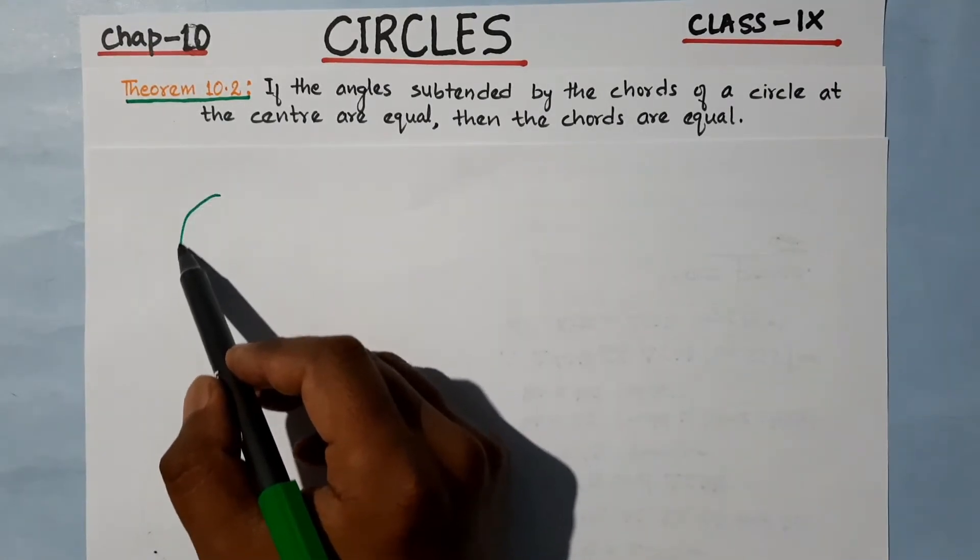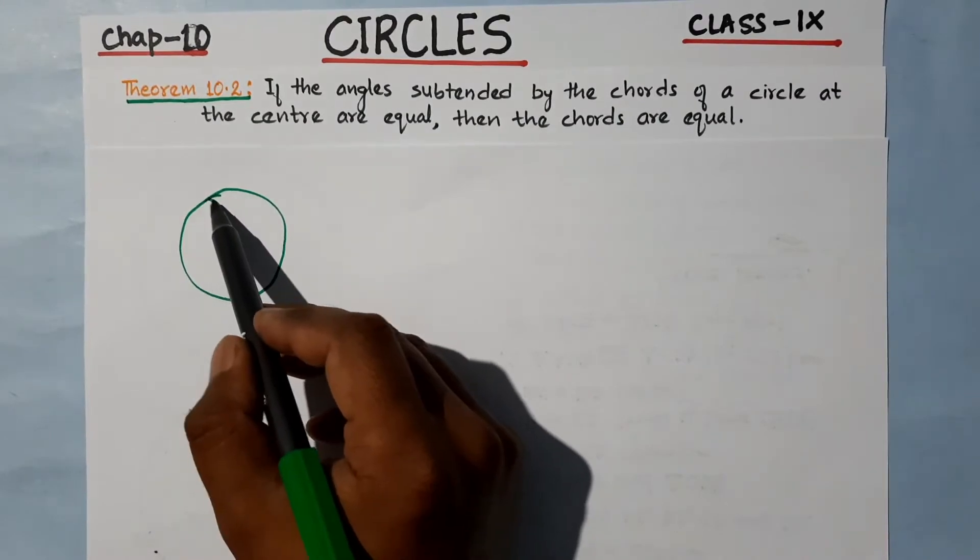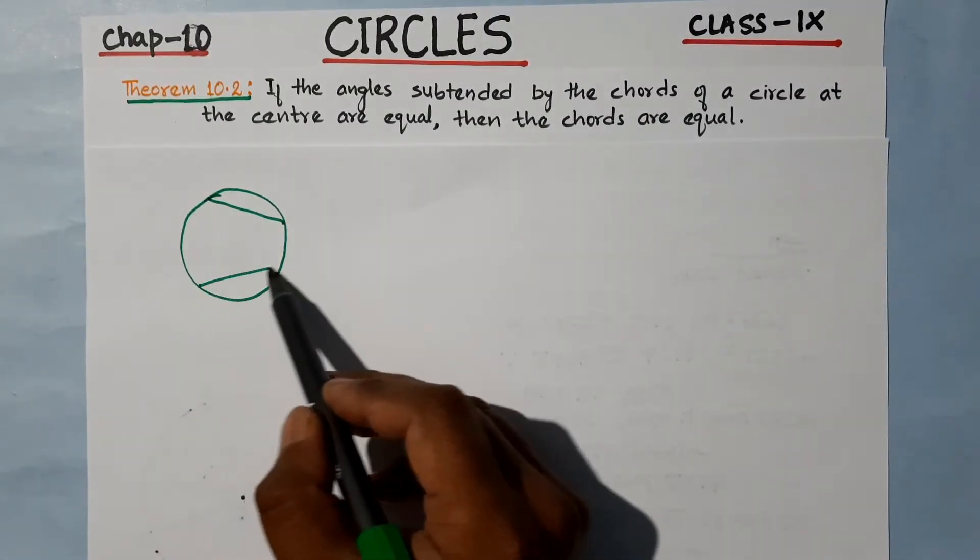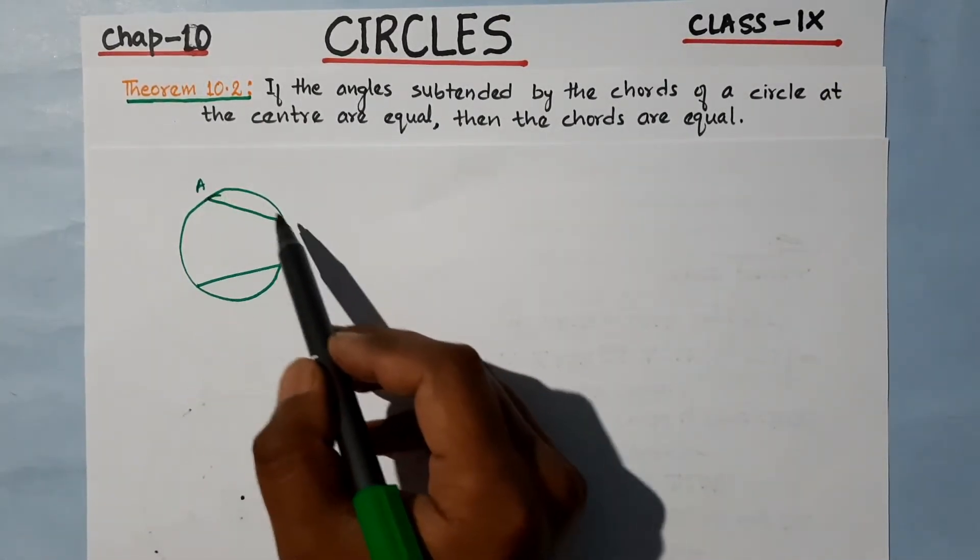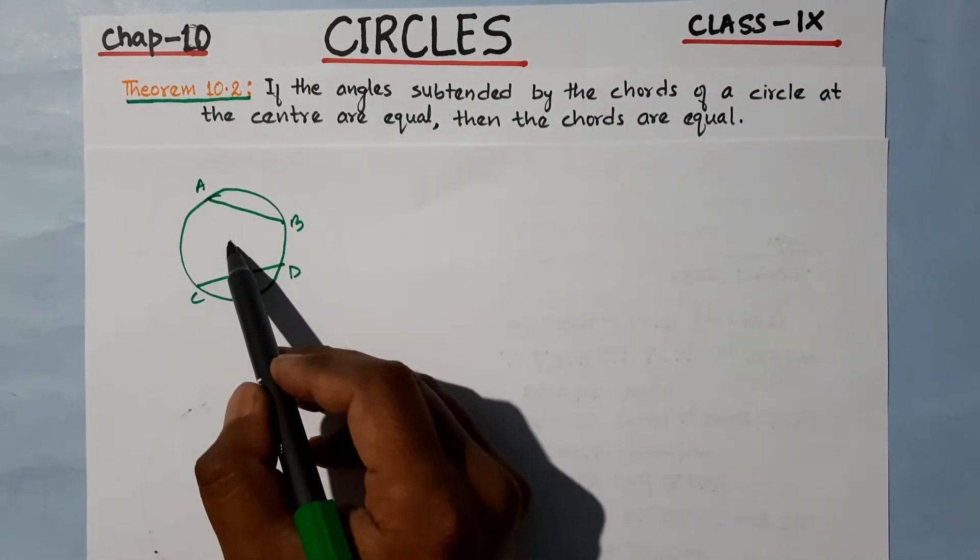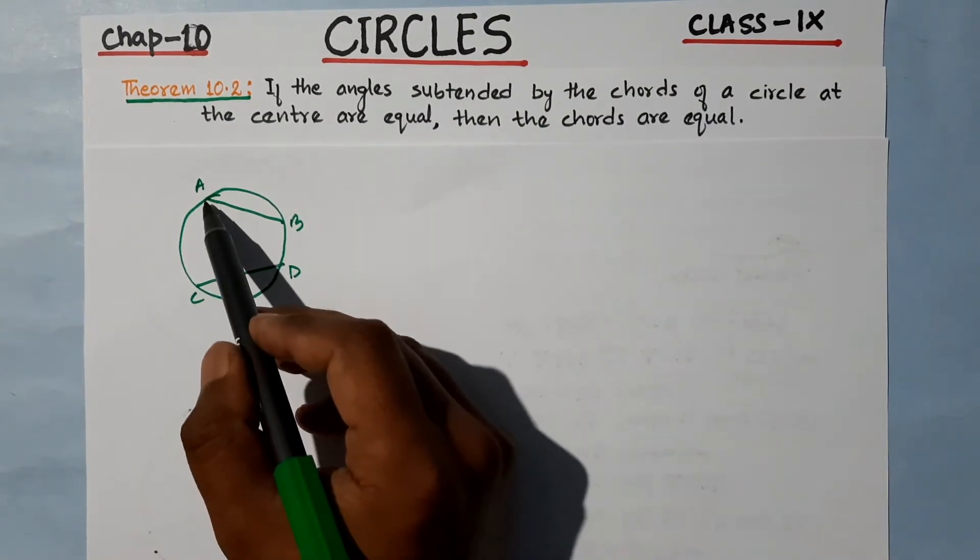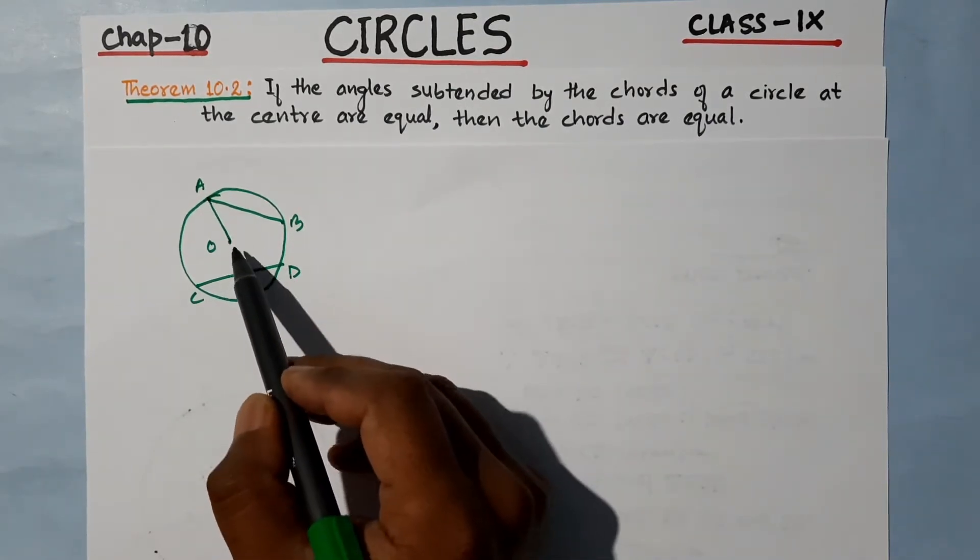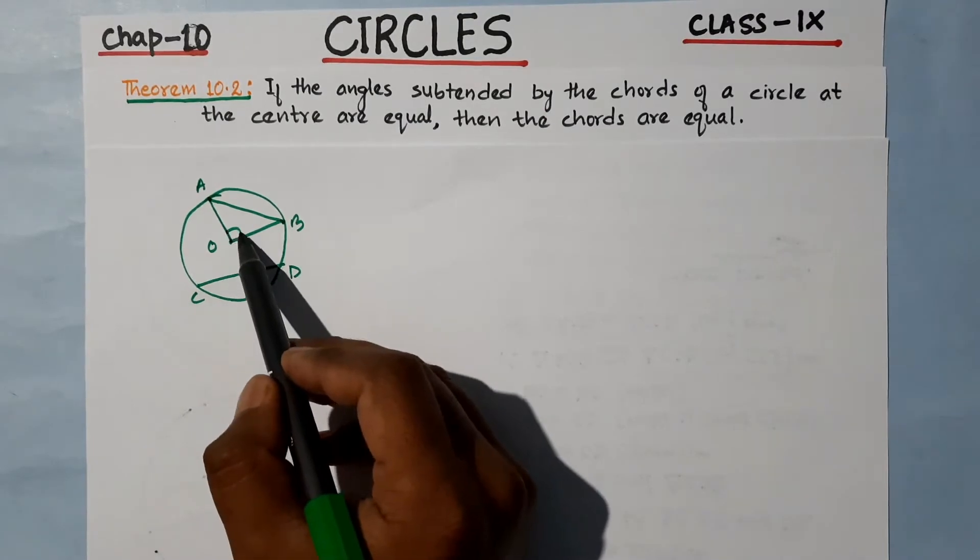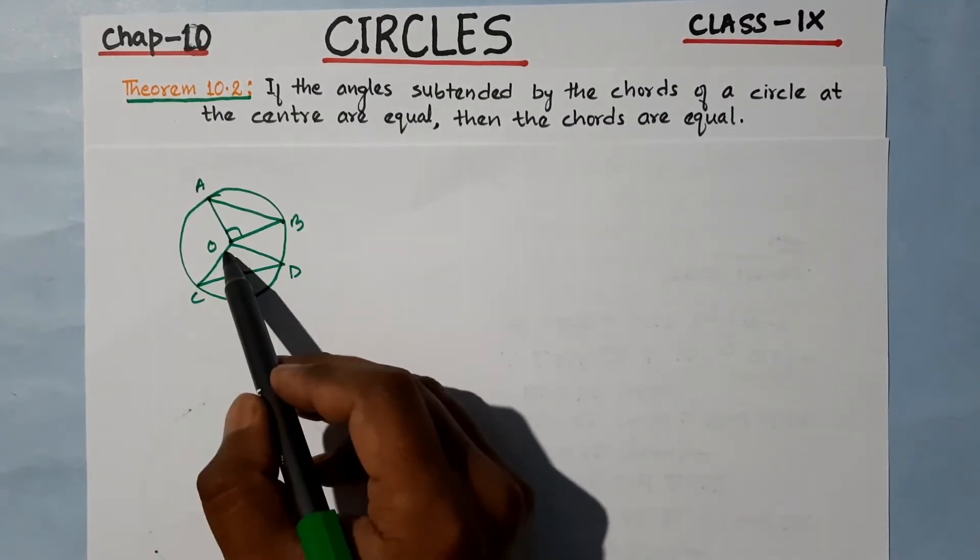Suppose we have a circle with two chords AB and CD. O is the center of the circle, and these chords subtend angles at the center - angle AOB and angle COD.